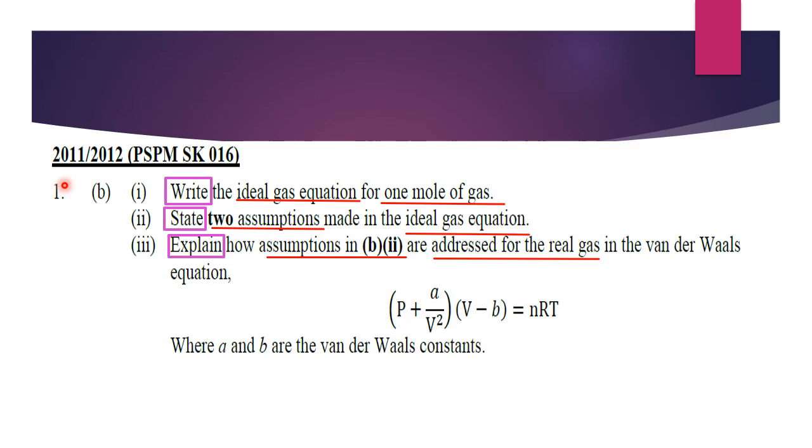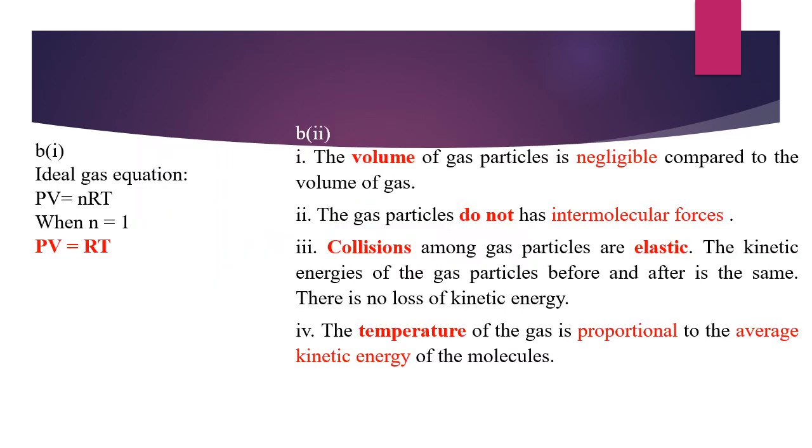Question 1, write the ideal gas equation for one mole of gas. State two assumptions made in the ideal gas equation. So for ideal gas equation is PV equal to nRT. One mole means when n equal to 1, so PV equal to RT.